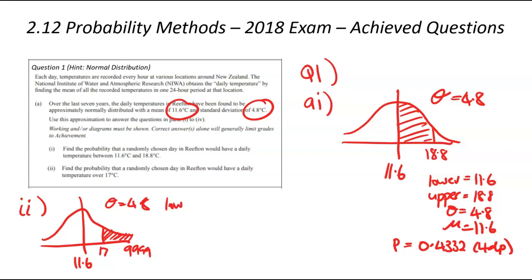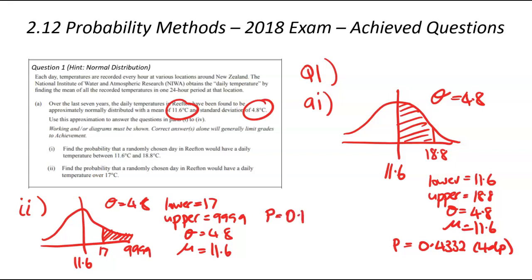So our lower on the calculator is 17. Our upper is 49999. Our standard deviation is 4.8, and mean is 11.6, both unchanged from the previous question. You put that into your calculator and you're going to get a probability of 0.1303. Again, I've used 4 decimal place rounding, which I always use for probability questions.